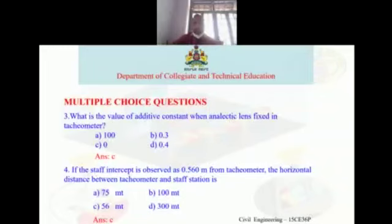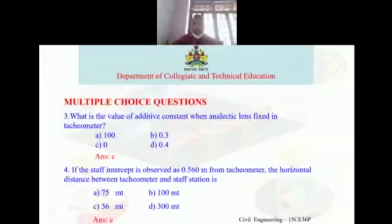Fourth question: if the staff intercept observed from a tacheometer is 0.560 m, what is the horizontal distance between the tacheometer and the staff station? Options: a) 75 m, b) 100 m, c) 56 m, d) 300 m. The answer is c, 56 m, because D = kS + c = 100 × 0.56 + 0 = 56 m.